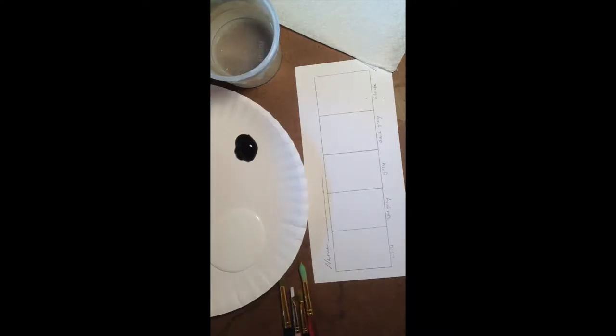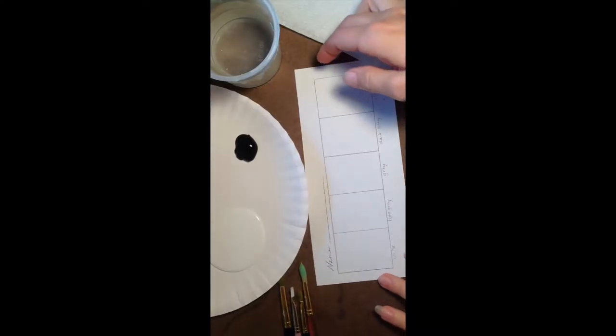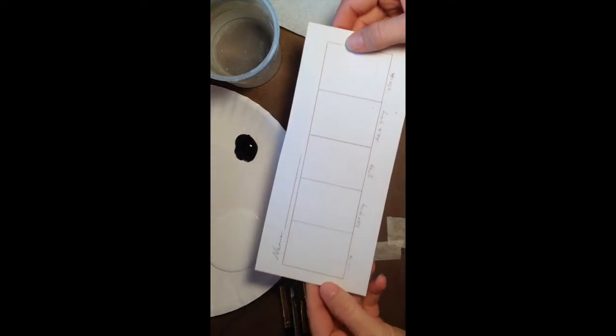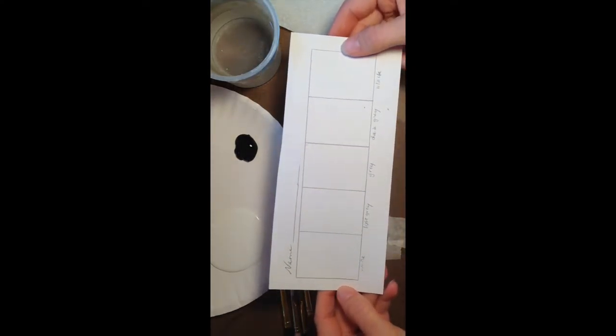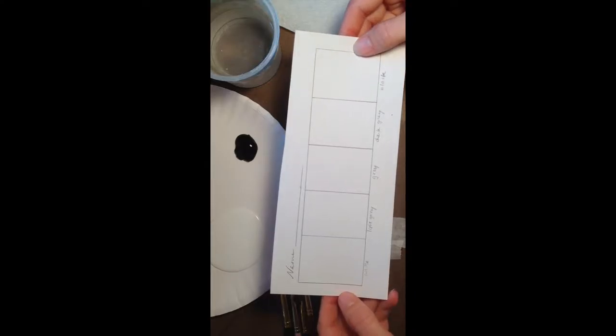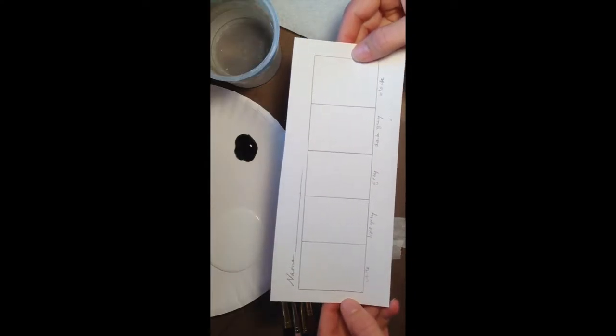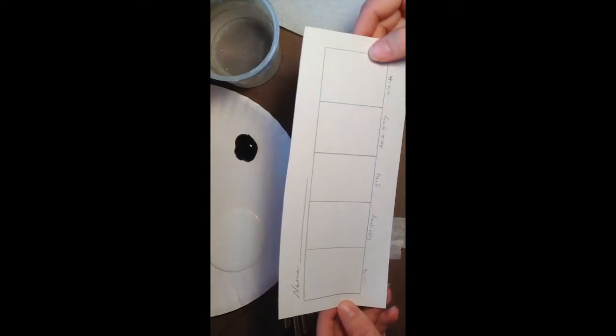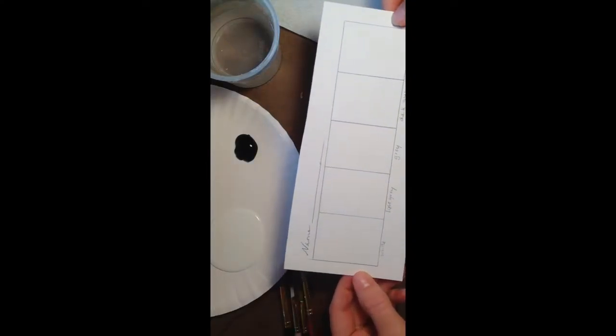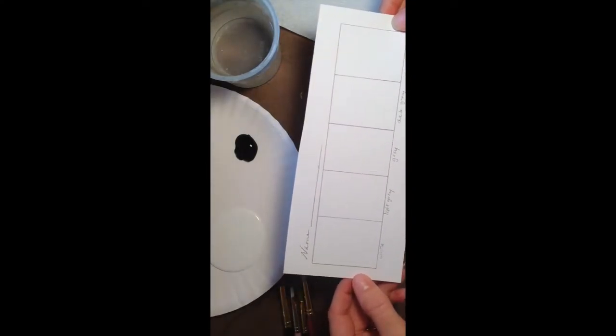I wanted to show you a few things that you're going to need to get started. First off, I've made a copy of the value scale just like you used last week with the pencil, but I've put it on a little bit better quality paper. When water gets on paper it makes it buckle and get all wrinkly, and hopefully this better quality paper will prevent that from happening.